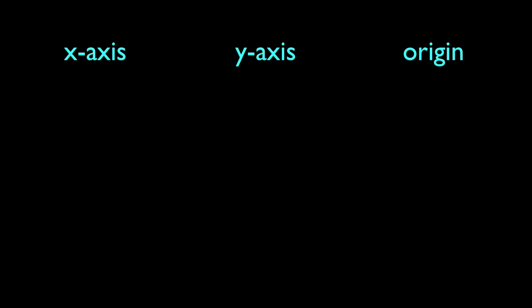First, the easy case. If it has x-axis symmetry, it's not a function. Because a point with reflection across the x-axis would fail the vertical line test. Well, there's one exception. The y equals zero function. The x-axis itself. Other than that, x-axis symmetry means it's not a function.